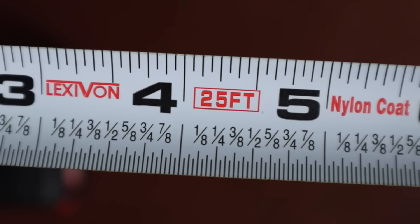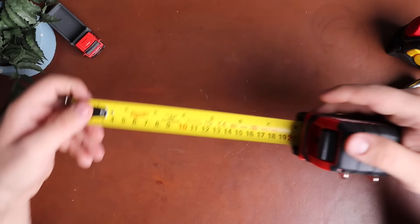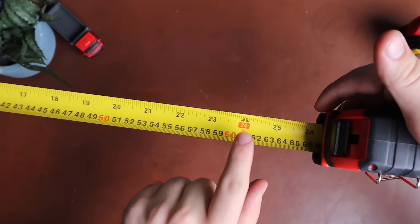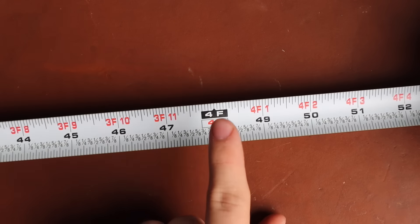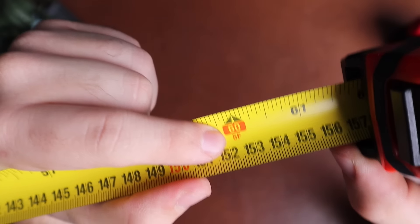There are also tapes that have the fractions written on them, which can make it a little bit easier to read. The next common mark on a tape is foot marks. Every foot, you'll typically have an arrow or color mark that marks the foot. That be on one, three, five feet, and so on.